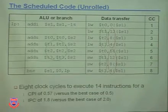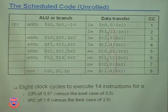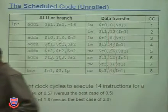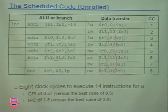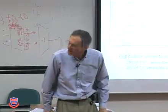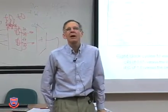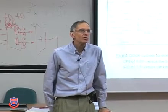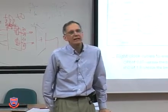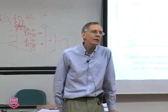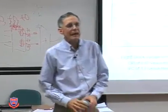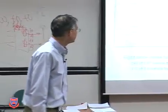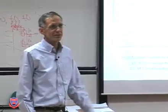Student question about dynamic array sizes: a compiler that doesn't know how big the array is and is told to do an operation for every element can only have a variable for when to stop. I think we should pass on that question and move on.